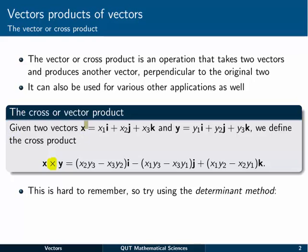The cross product of an x vector given in Cartesian form and a y vector in Cartesian form is given by this rather long rule.